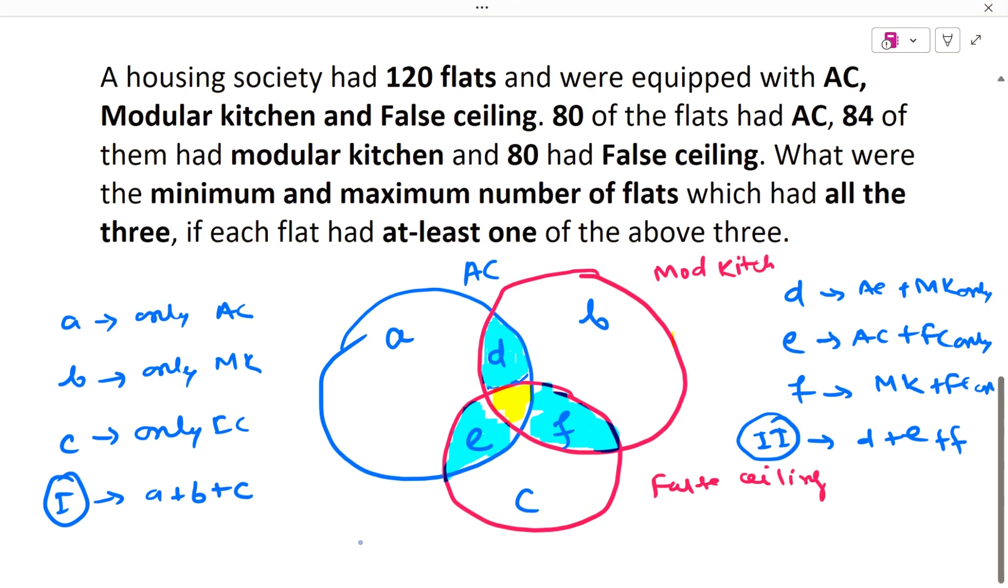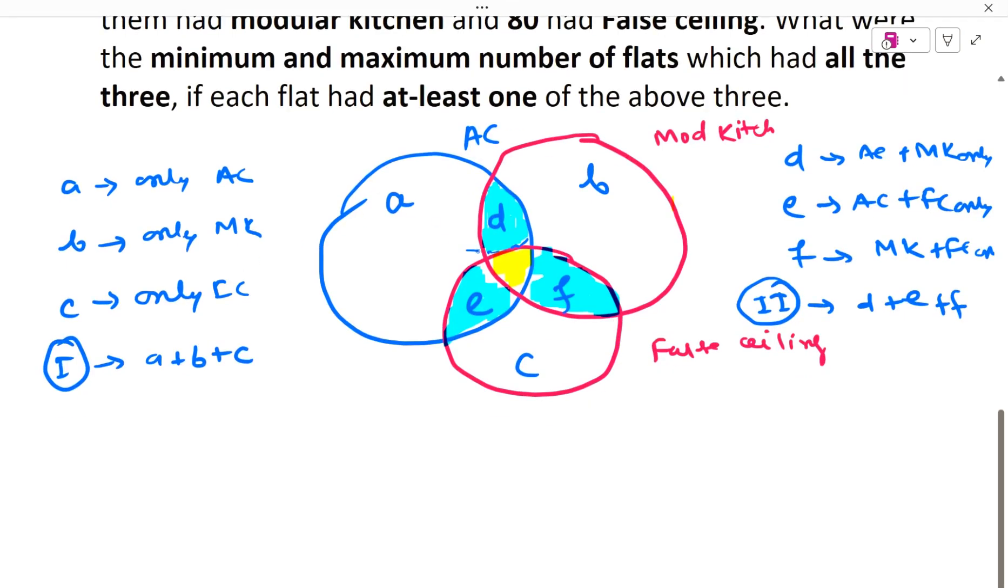So let us denote this by 2, D plus E plus F by exactly two, which means exactly two of the variables out of three. Let us now denote this all three area by G. And let us see, G is exactly three. So it contains all the three items. So AC plus MK plus FC, all these three are denoted by G. And let us denote this by 3.